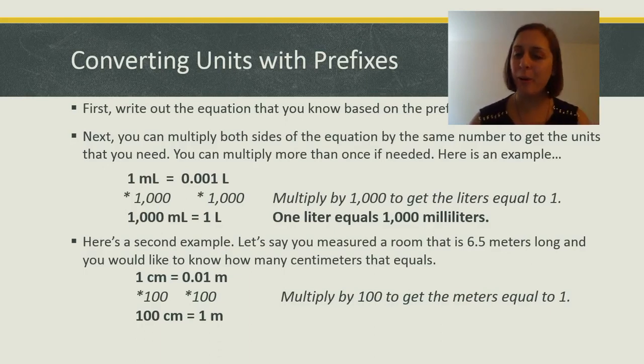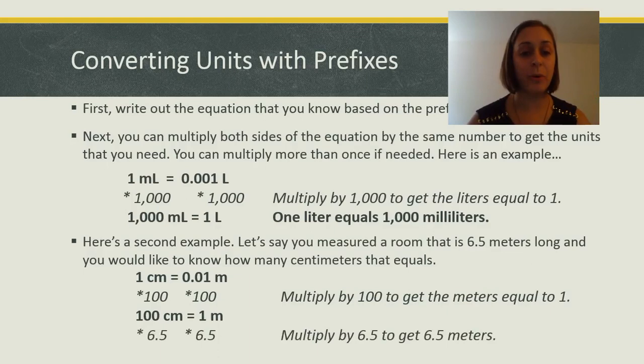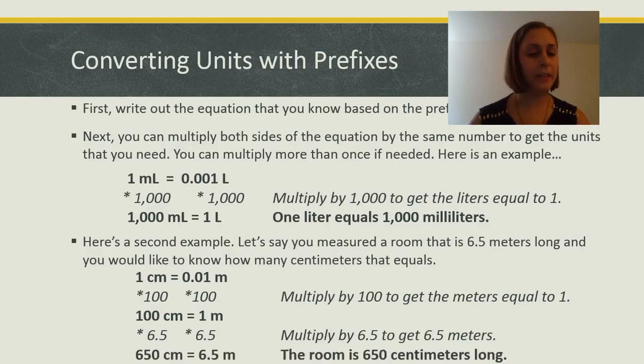Now, we want to know about the room, though. And the room is six point five meters long. So, let's multiply both sides by six point five. On the left, one hundred times six point five equals six hundred and fifty centimeters. On the right, one meter times six point five equals six point five meters. So, the room is six hundred and fifty centimeters long.